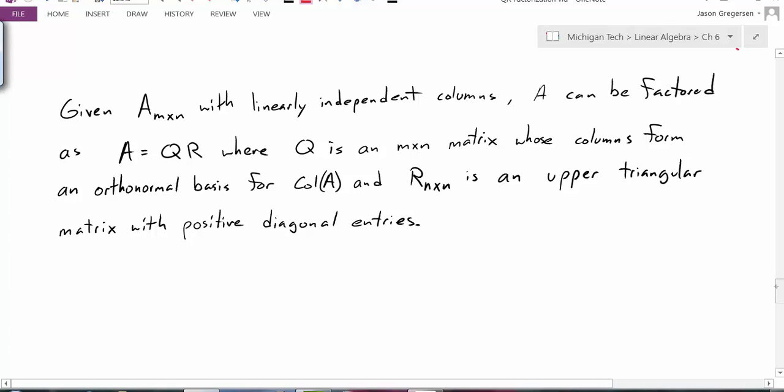So, given some A, which is an m by n matrix with linearly independent columns, then A can be factored as A equals Q times R.